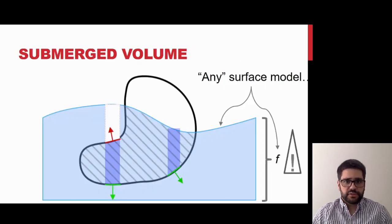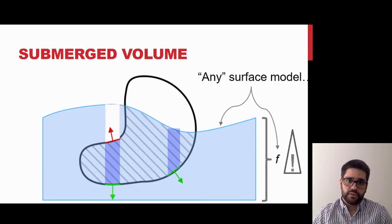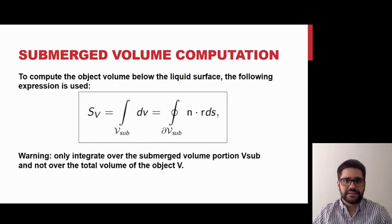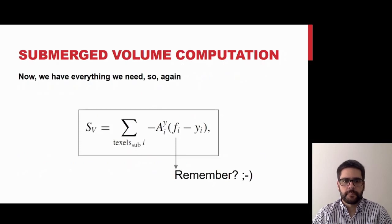Using the previously presented textures, we can compute the submerged volume for any model object, given the depth of each texel, which in turn can be computed from the position of the texel and the liquid height at that position. That information depends on the liquid description in the scene, which can be particle-based or a simple grid.